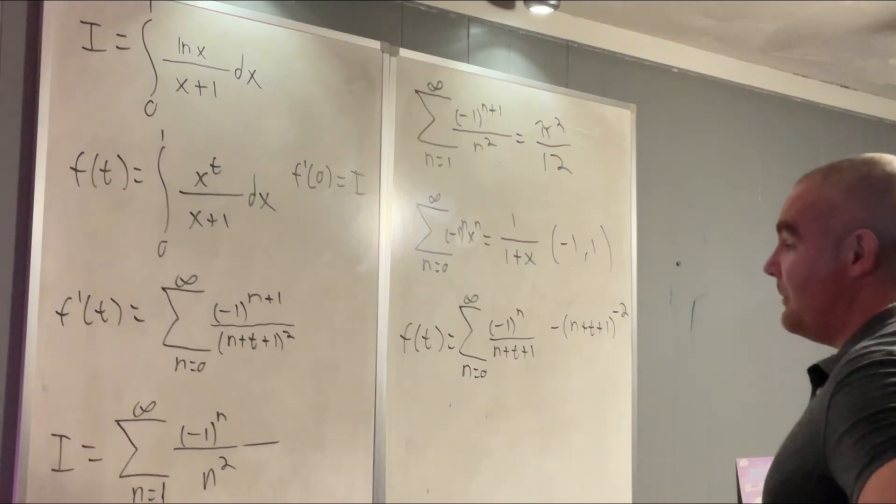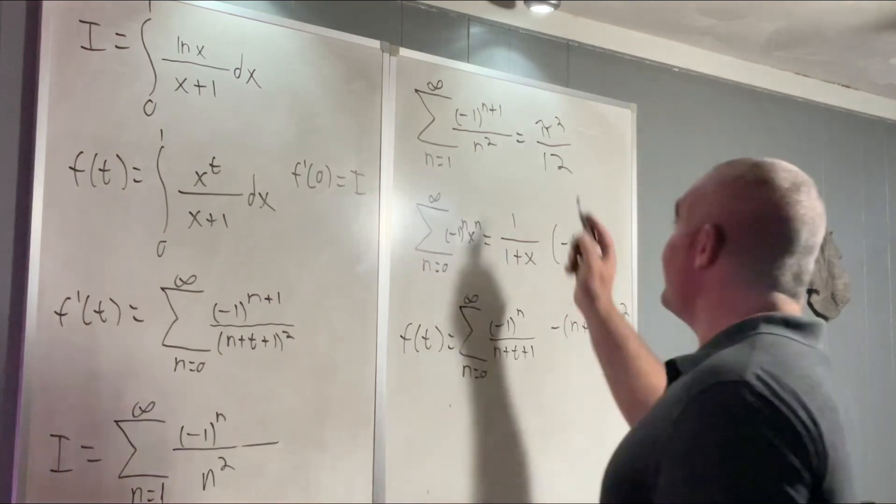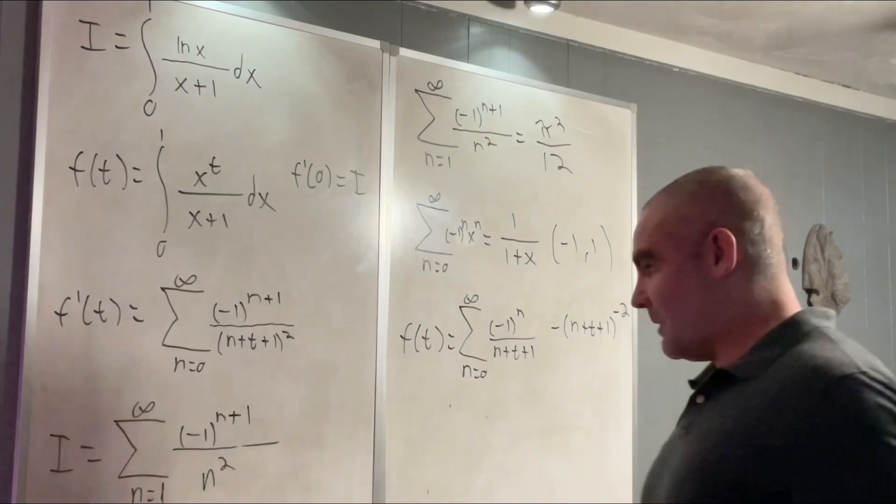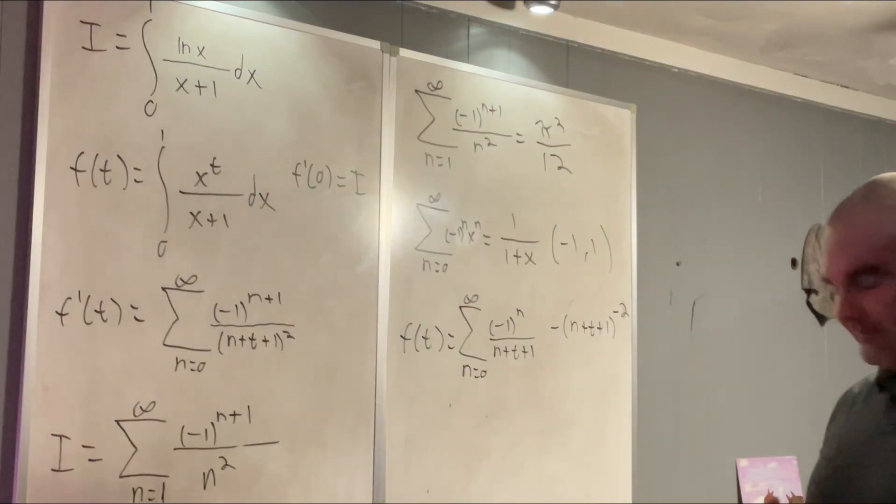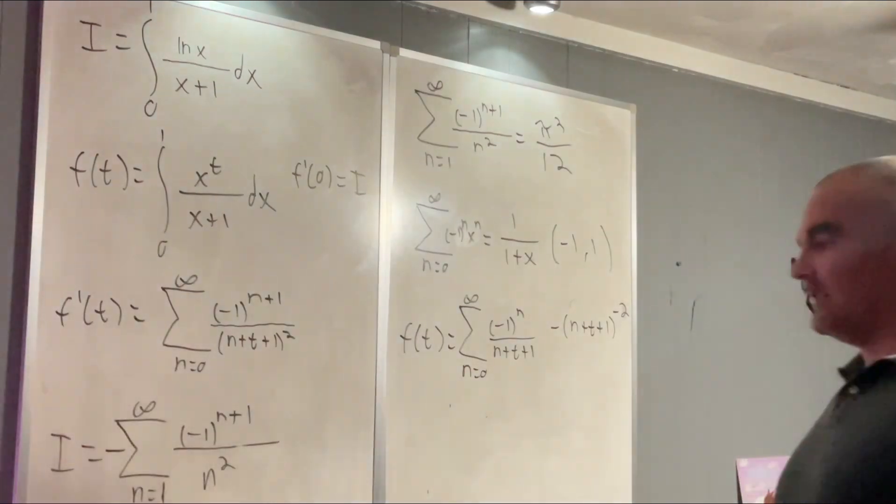Not exactly what we want, but we know that if we add 1 to this exponent on negative 1, that will simply have the effect of adding a negative sign in front of our sum.